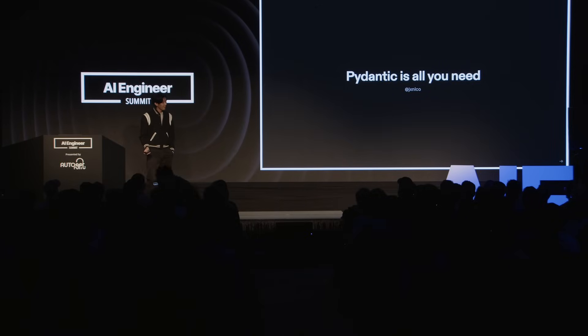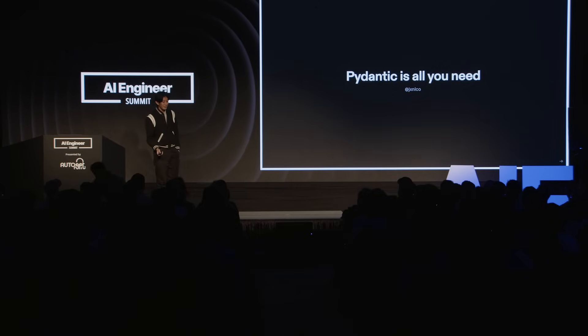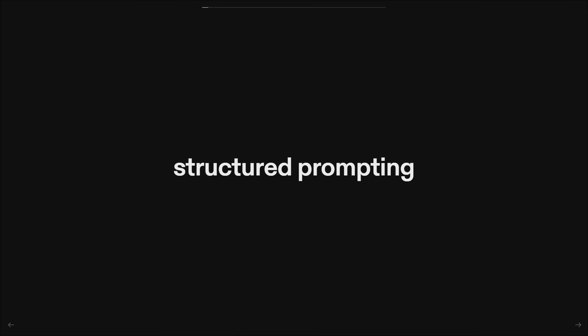I didn't know I was going to be one of the keynote speakers, so this is probably going to be the most reduced-scope talk of today. I'm talking about type hints, and in particular, how Pydantic might be all you need to build with language models. I want to talk about structured prompting — the idea that we can use objects to define what we want back out, rather than praying to the LLM gods that the comma is in the right place and the bracket was closed.